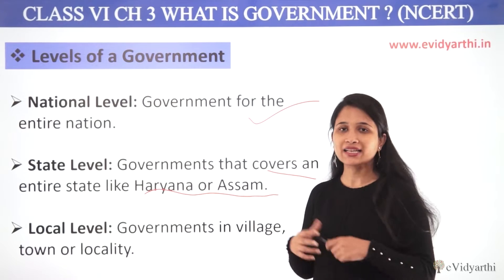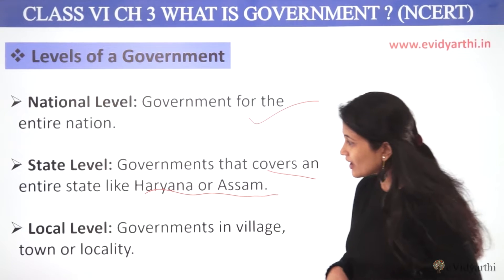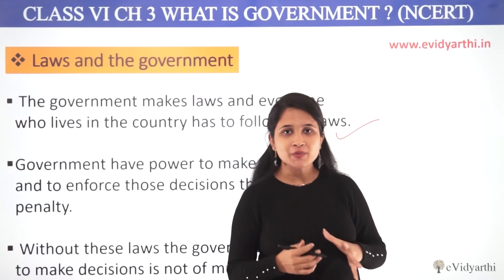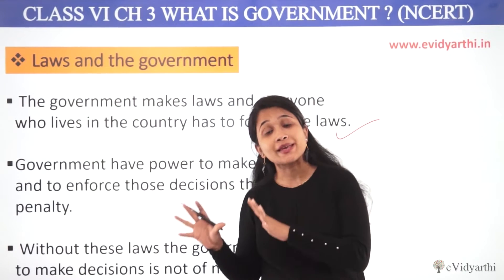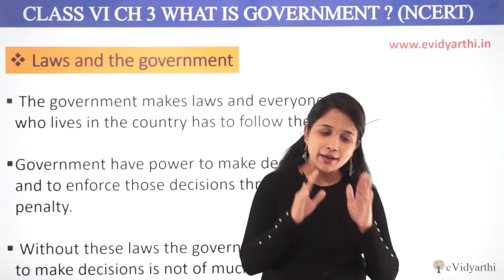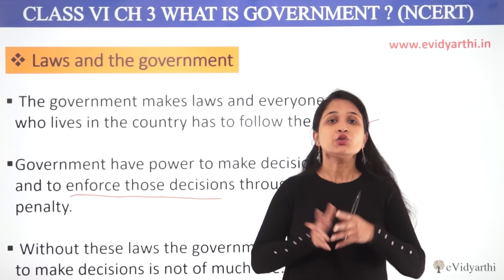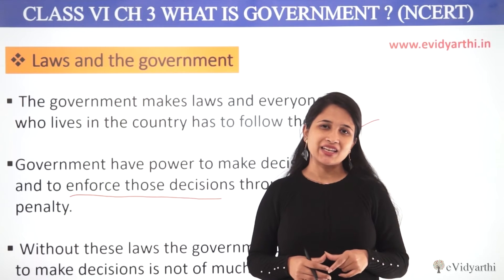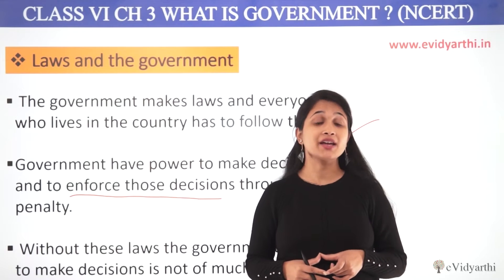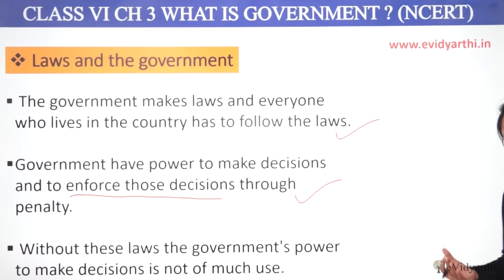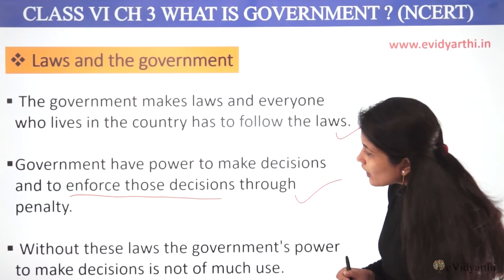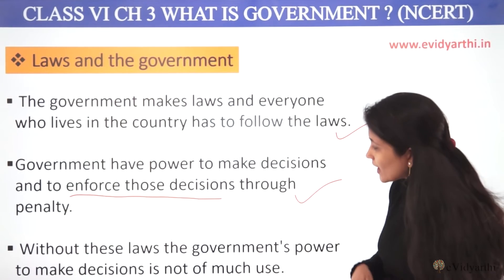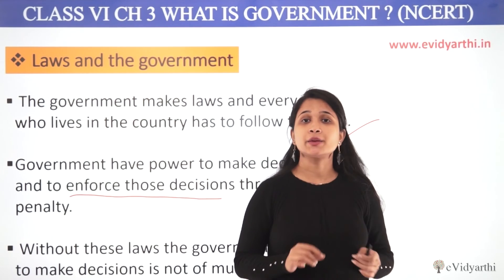Let's look at the levels of government. Our government is working on three different levels. First of all, it is working at the central level. The central level is our central government. If we go to the nation's level, we deal with the nation. Then we come to the state level — every state will have a government that works for that state.